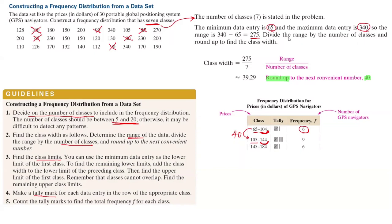Continue the process. The third class starts at 145 and stops at 184. The frequency is 6. You can continue this process.